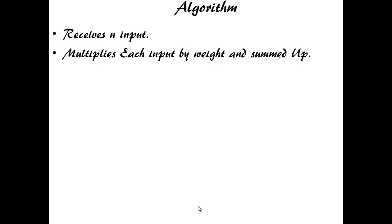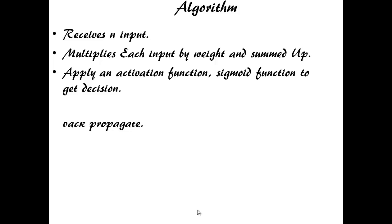Receives n input. Each input is multiplied by its weight and summed up. Apply an activation function, sigmoid function to get the decision or result. If actual output is different from the desired output then backpropagate.